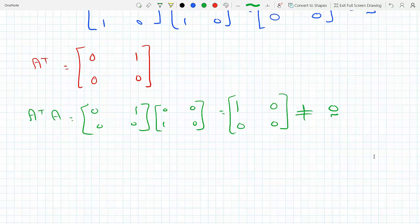So that means we're multiplying, we're taking the dot product of the rows of the original with themselves. So we're taking the columns of A with themselves.